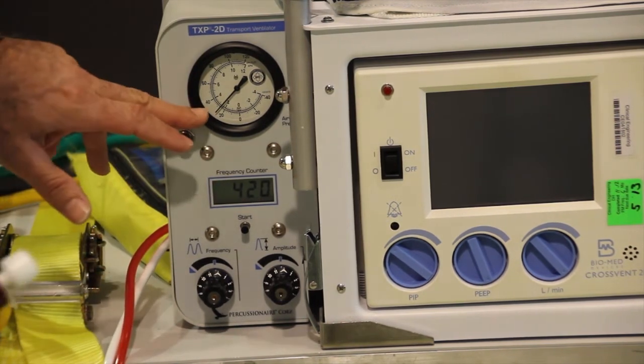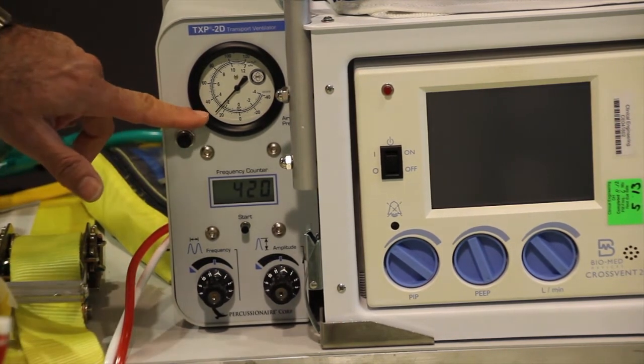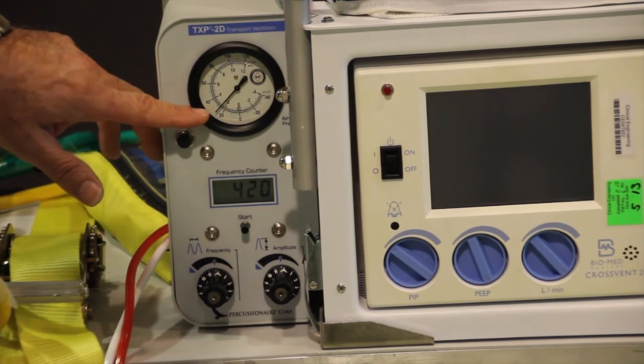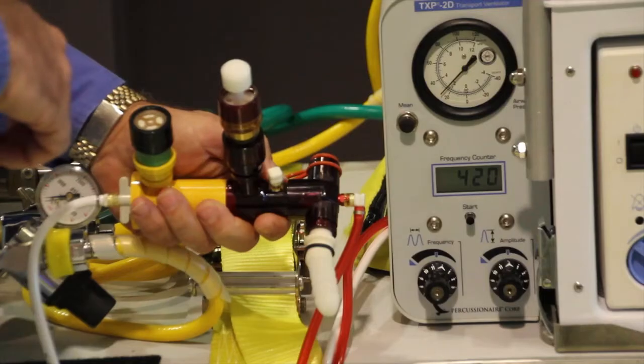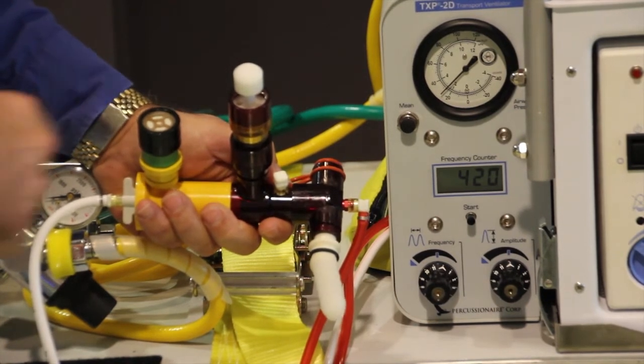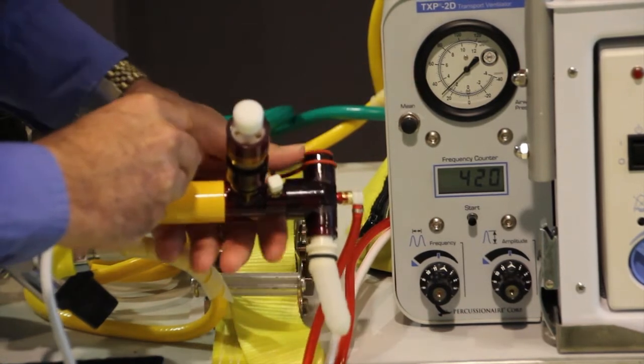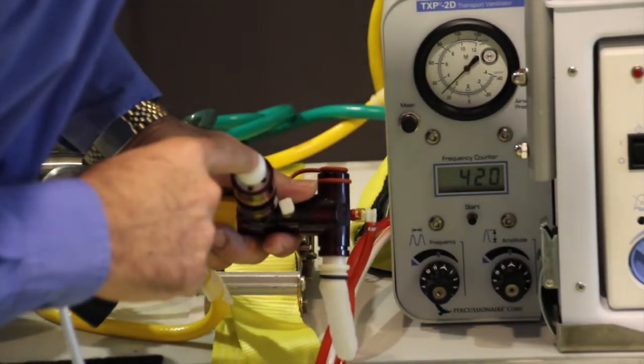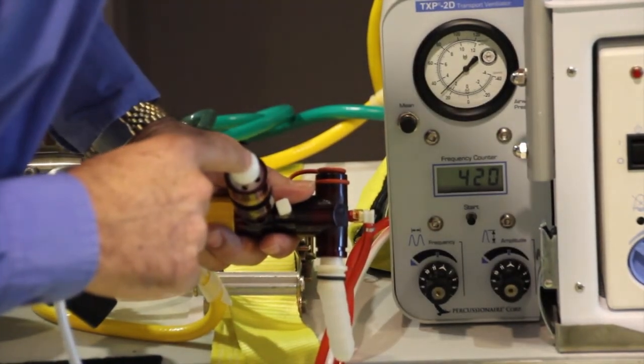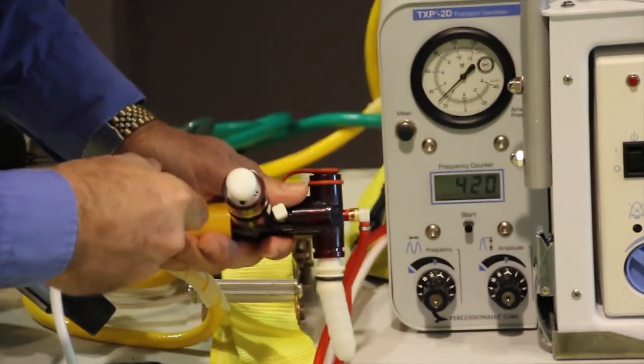Then we're going to match the mean airway pressure. To keep it simple, I don't know if you can see on the manometer right here, but we're probably around 26 to 28, something like that. I'm going to adjust my manometer down to about 20. To adjust the mean airway pressure on the manometer here, I'm going to dial my peep knob counterclockwise.